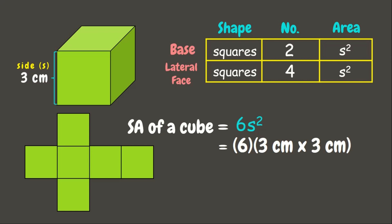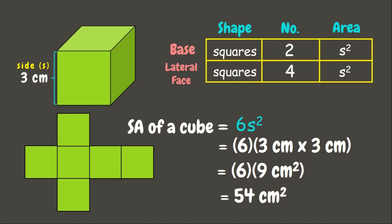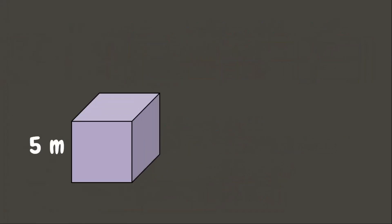Now let us solve. We have 6 times the square of the side, which is 3 centimeters. So that would be 3 cm × 3 cm. We have 6 × 9 square centimeters, and if we multiply, we get 54 square centimeters. That is the surface area of the cube.